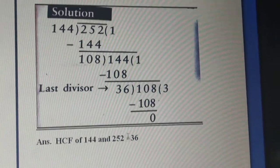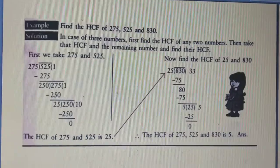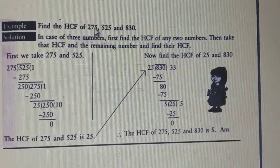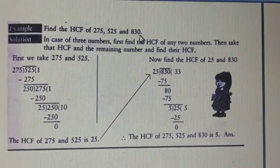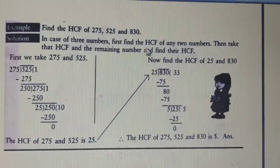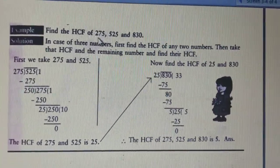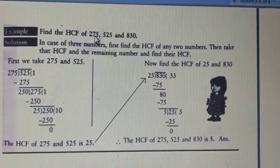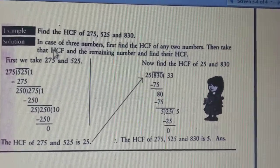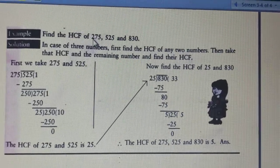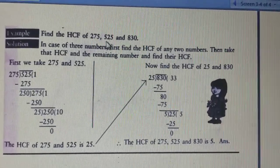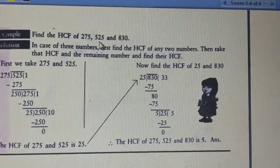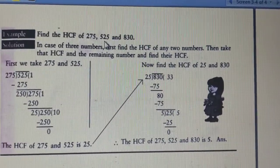Now let me give you one more example. The next example has three numbers: 275, 525, and 830. When we have three numbers, we first work with the first two — the smallest number and the number greater than the smallest. So 275 is the smallest and 525 is greater than 275. We are not taking the greatest number right now.